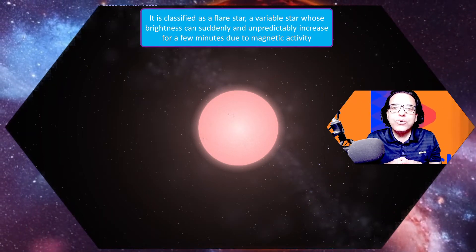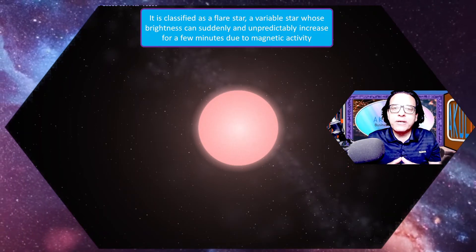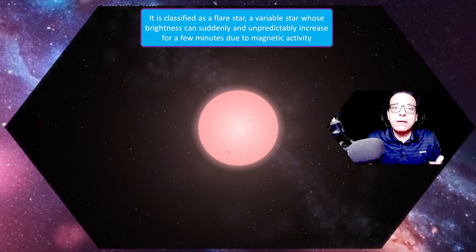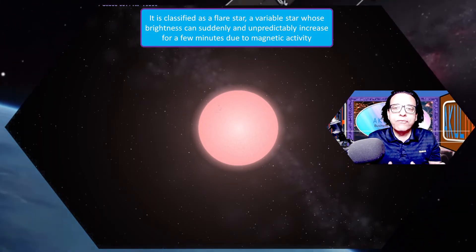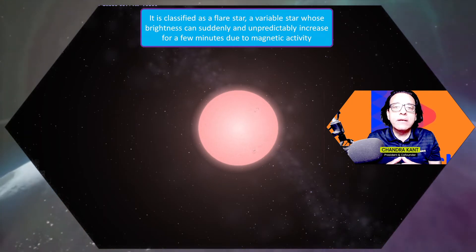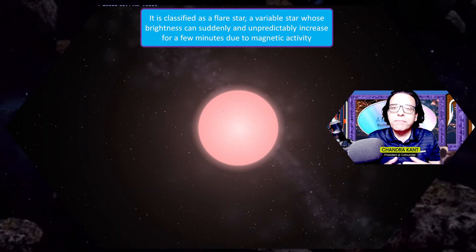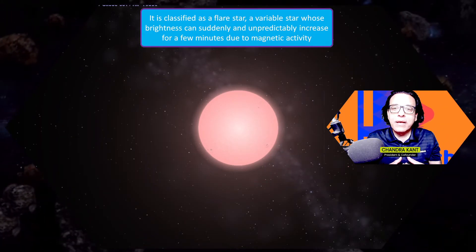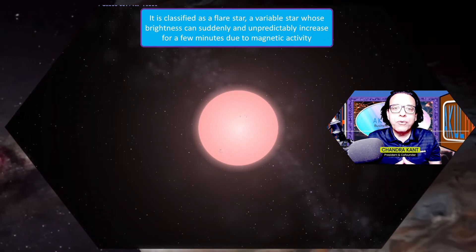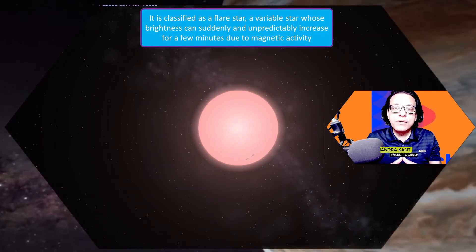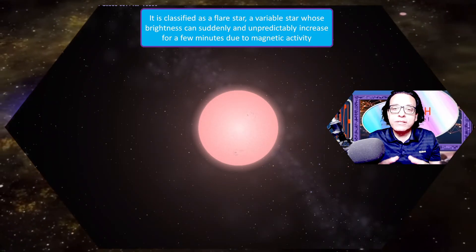Most of the energy released by red dwarfs is in the invisible spectrum of infrared light. However, because the star has a lot of hydrogen which is free to float around in the form of plasma, there is very high magnetic energy produced inside red dwarfs. Sometimes within a few minutes, the entire magnetic energy is released, like solar storms we experience on the sun.